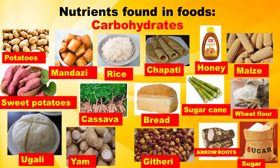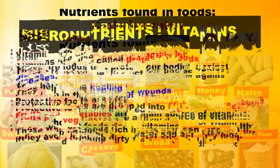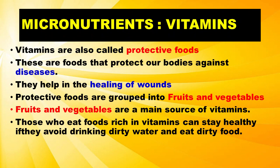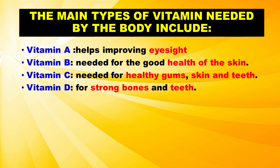Vitamins are also called protective foods. These are foods that protect our bodies against diseases and help in the healing of wounds. Protective foods are grouped into fruits and vegetables. Fruits and vegetables are a main source of vitamins. The main types of vitamins needed by the body include: Vitamin A, which helps improve eyesight; Vitamin B, needed for good health of the skin; Vitamin C, needed for healthy gums, skin, and teeth; and Vitamin D, for strong bones and teeth.